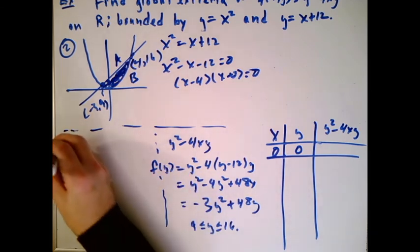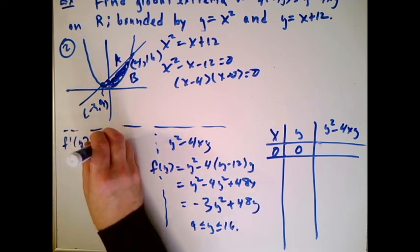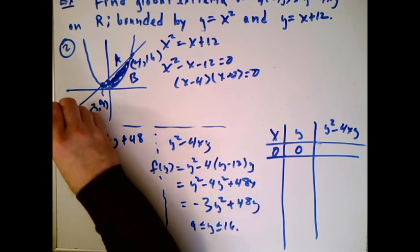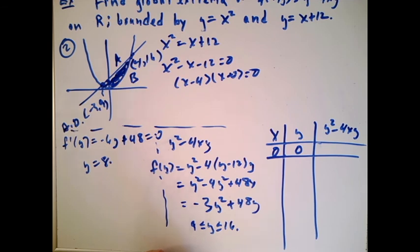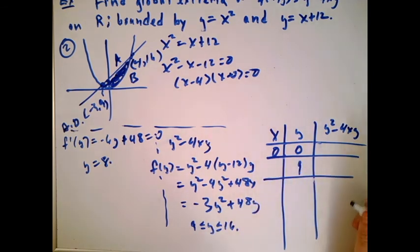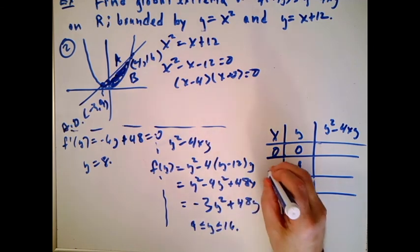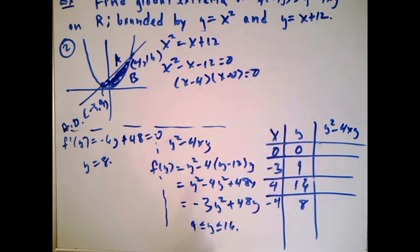Taking the derivative (not a partial — it's a function of one variable), f'(y) = -6y + 48, which is always defined. Setting equal to zero gives y = 8. So our Calc 1 problem on boundary A has endpoints y = 9 and y = 16, and a critical point at y = 8. The corresponding x values are: x = -3 at y = 9, x = 4 at y = 16, and x = y - 12 = 8 - 12 = -4 at y = 8. These all go into our table.